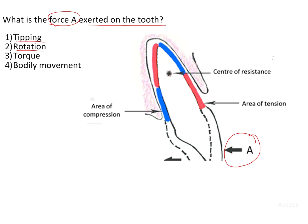That is whether it is tipping, rotation, torquing, or bodily movement. What we can appreciate from this figure is that this force is being applied away from the center of resistance. Number two, this force is a single force. So there is a single force acting away from the center of resistance.